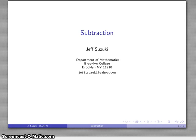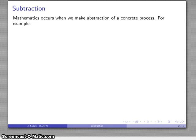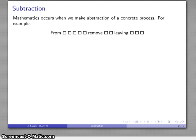Our next important arithmetic operation is subtraction, and again, mathematics occurs when we make abstraction of some sort of concrete process. In the case of subtraction, what that concrete process might be is I might take something and remove some amount. So I have an amount, I remove some of it, and I have something that's left over.